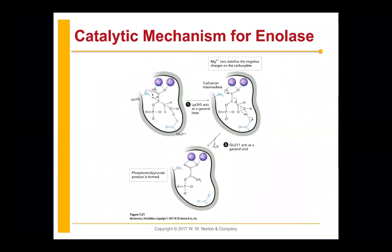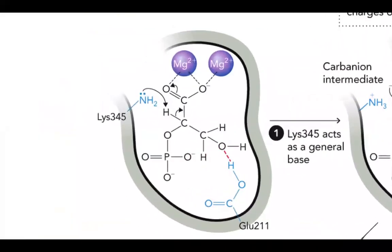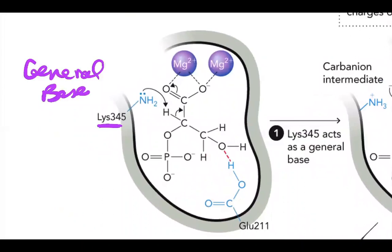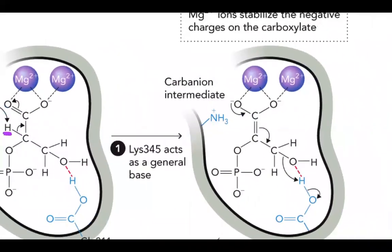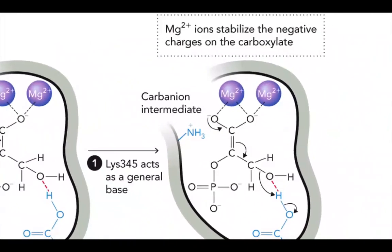Looking at our first step: lysine-345 right here is going to act as a general base. If it acts as a general base, it's going to remove a proton — here's the proton it is going to remove from our substrate at carbon-2. When you remove that proton, you get a carbanion intermediate.